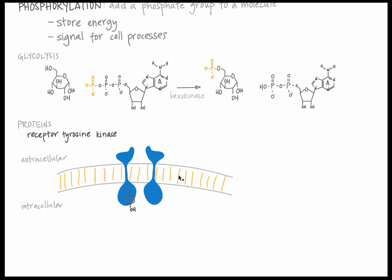Each RTK has a tyrosine side chain exposed to the intracellular cytoplasm that can be phosphorylated. I've only drawn the tyrosine on one RTK, but it exists on both.